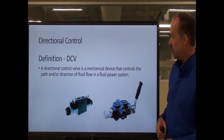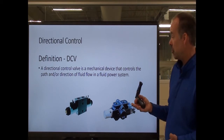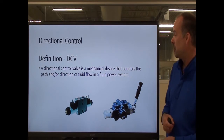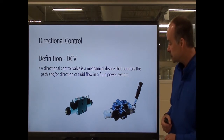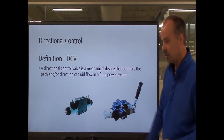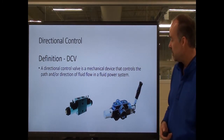The next type of directional control is a DCV, or directional control valve. It's a mechanical device that controls the path and direction of fluid flow in a fluid power system. Here are some different examples of what a DCV might look like.